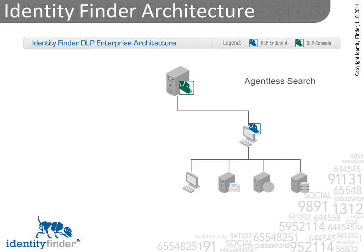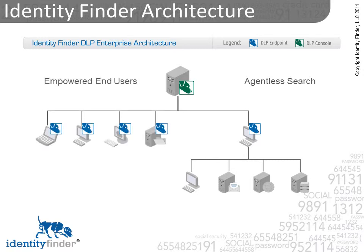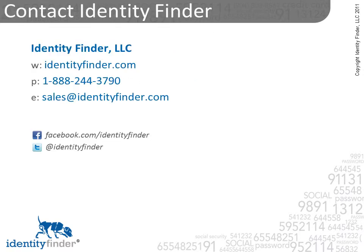We understand that your business will have unique needs, which is why Identity Finder's architecture is flexible and may be configured for any number of hybrid deployment scenarios. We make it easy and affordable to find and protect sensitive information. For more information on how privacy security software can protect your personal and business information, and for a free demo, visit www.identityfinder.com or call 888-244-3790. Thank you for listening!